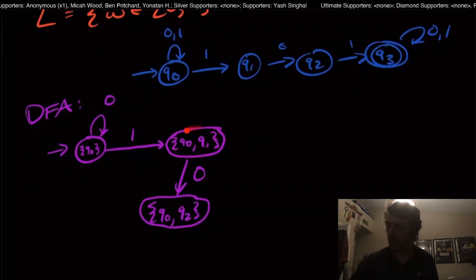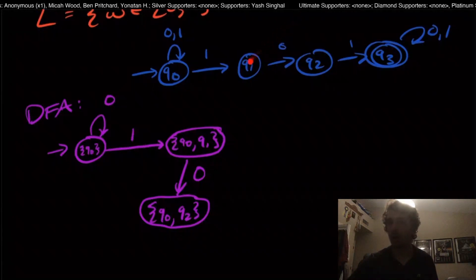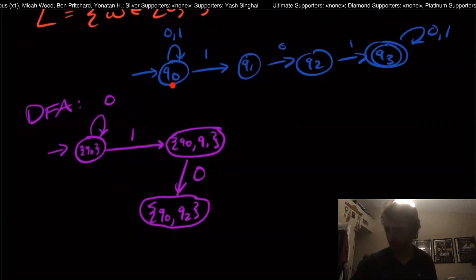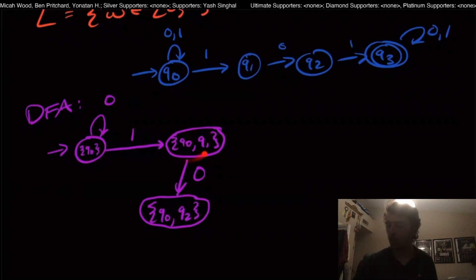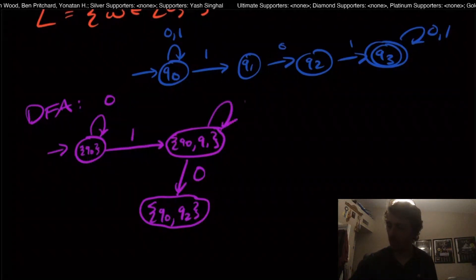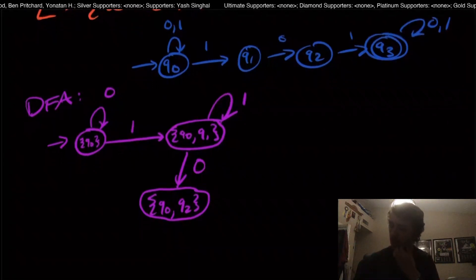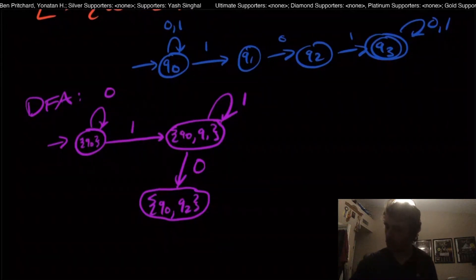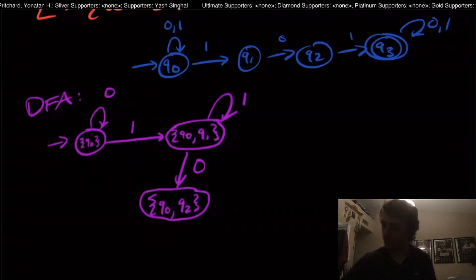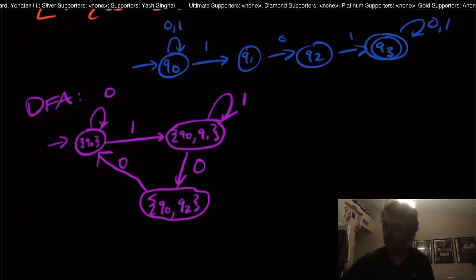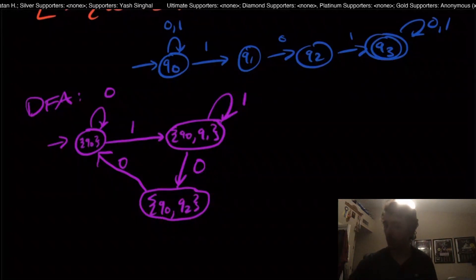What about on input one from state {q0, q1}? Well, q1 doesn't go anywhere on input one. So the only one that really matters is q0's transition on one. We've already figured out where that goes — to state {q0, q1} — so this will be a self-loop on one. And on input zero from state {q0, q2}, it turns out we come back to {q0, q2}, because q2 doesn't do anything on zero and q0 on zero goes to itself.